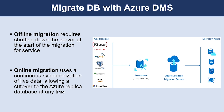Azure Data Migration Service has two pricing tiers: Standard and Premium. Standard only supports offline migration, and there is no charge to use this tier. The Premium tier supports both offline and online migration, and there is no charge for the first six months. After that period, you will incur charges.